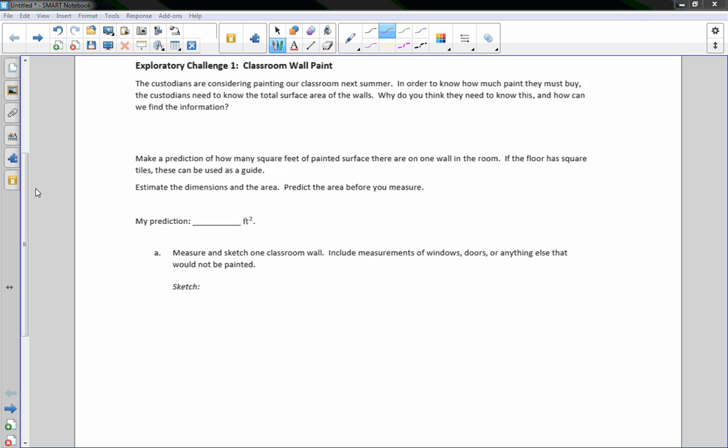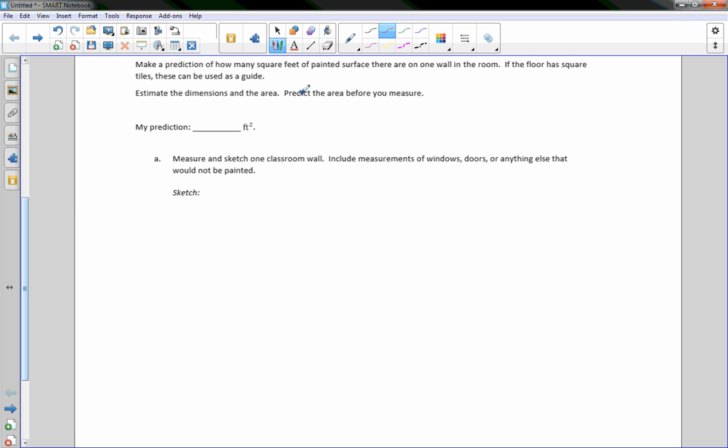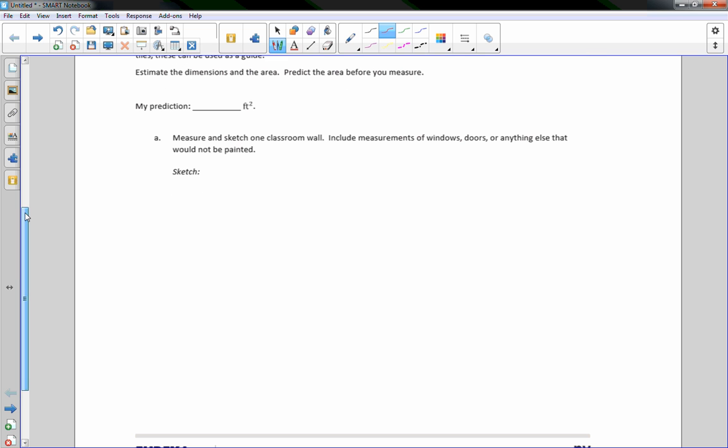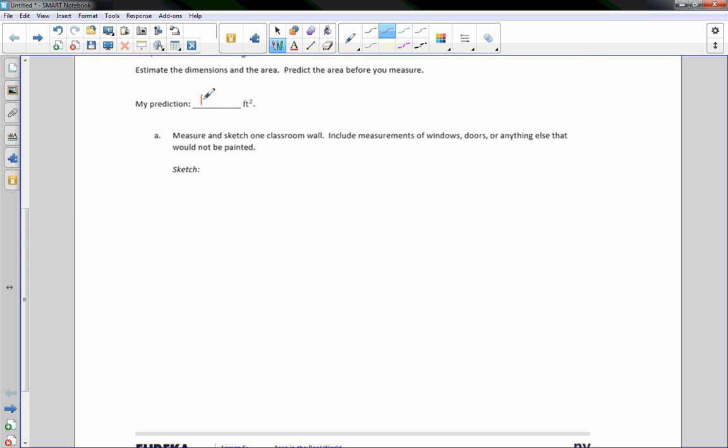So it says here, make a prediction of how many square feet of painted surface area there are on the wall in the room. If the floor has square tiles, these can be used as a guide, estimate the dimensions and the area, predict the area before you measure. So I'm just going to make an estimation here and I'm going to say that I think that our wall that we're going to paint in our room is 100 square feet. Okay, I'm only going to use one wall. It would require way too much work to measure four walls with all the cabinets and the boards and the windows. So I've decided to just focus on one wall in my room.